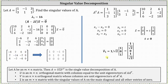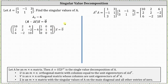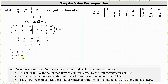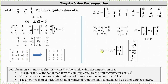For lambda sub two equals six, we set up the vector equation, augmented matrix, and reduce to row echelon form. Row one gives X one plus X three equals zero, row two gives X two plus X three equals zero, and X three is a free variable. Letting X three equal T, the eigenvectors are T times the vector (−1, −1, 1). The magnitude of (−1, −1, 1) is the square root of three, so vector V sub two, the second column of matrix V, has components (−1/√3, −1/√3, 1/√3).